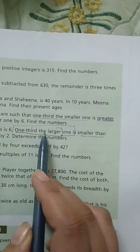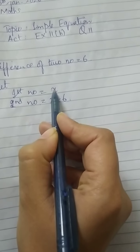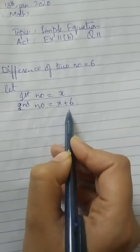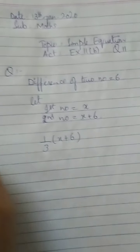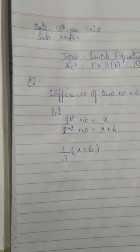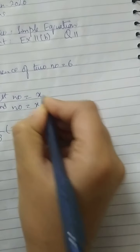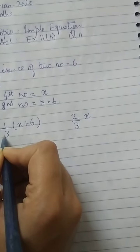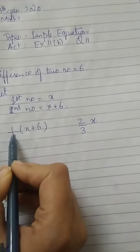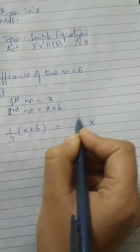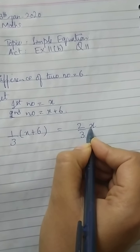Next condition dekh rahe hain: one third the larger one. Larger number X+6 hoga, kyunke agar X=3 hai to 3 plus 6, yeh bada number hai. To one third of the larger one is smaller than two thirds of the smaller one. Two third agar hum lete hain smaller number ka — smaller number kya hai? X. One third of larger number, two thirds of smaller number X se smaller hai.